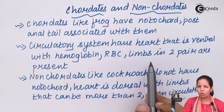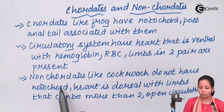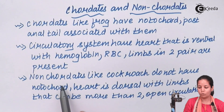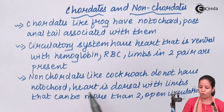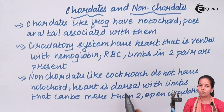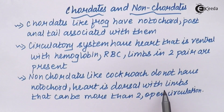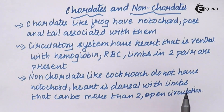Chordates have legs or limbs that are always in pairs. Non-chordates, like cockroaches, which don't have notochords, have their heart dorsally placed. They do have limbs, and these limbs can be 2, 3, or 4 pairs, depending upon the organism.